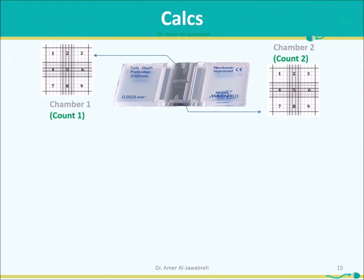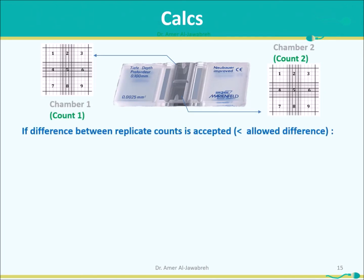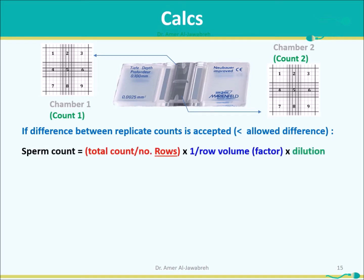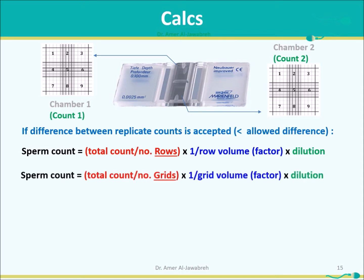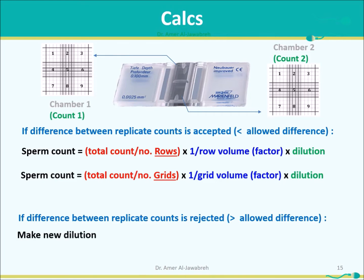Calculations: If the difference between replicate counts is accepted (less than allowable difference), then sperm count equals total count divided by number of rows, times 1 over row volume, times the dilution. Alternatively, sperm count equals total count divided by number of grids, times 1 over grid volume, times the dilution. If the difference is rejected, make a new dilution.